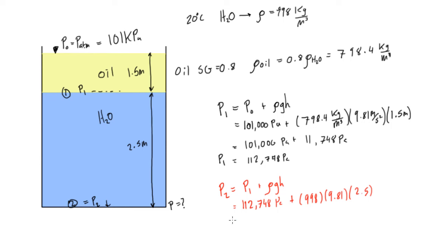So, we get 112,748 plus this term becomes 24,476. This is all pascals. And when we add these together, we're going to find that P2 is going to equal about 137,224 pascals. Or, probably more conveniently, we can say that P2 is going to equal about 137 kilopascals.